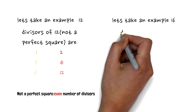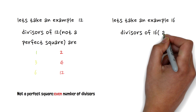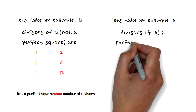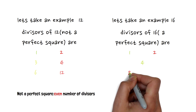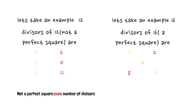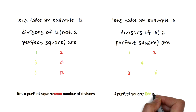Now let's take a perfect square like 16. There are five numbers that can divide 16 completely: 1×16, 2×8, and 4×4 — so 1, 2, 4, 8, and 16. In the first round the 16th bulb is toggled on. In the second round it is switched off. In the fourth round it is switched on again. In the eighth round it is switched off, and in the 16th round it is switched on.